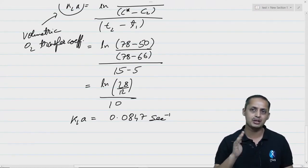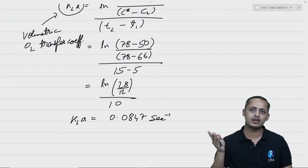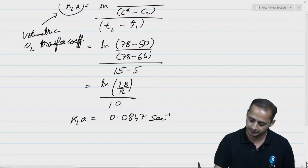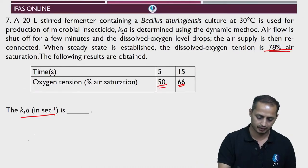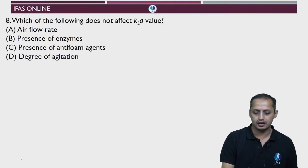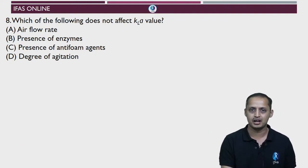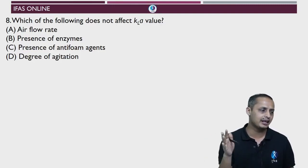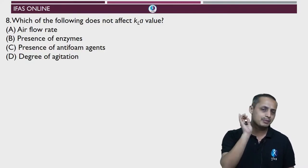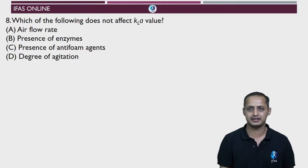These questions seem tough conceptually but are actually very simple once you know the formula. These types of questions have appeared in competitive examinations like GATE. You need a little patience and careful attention to units — how to convert per hour to per second, millimoles to grams, and so on. Basic unit conversion knowledge is essential, and biochemistry will also help here.